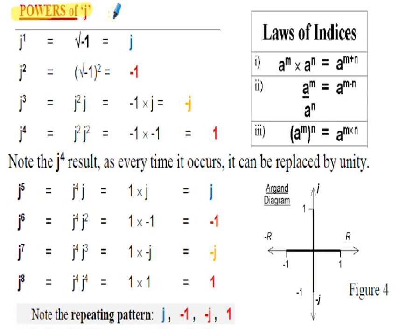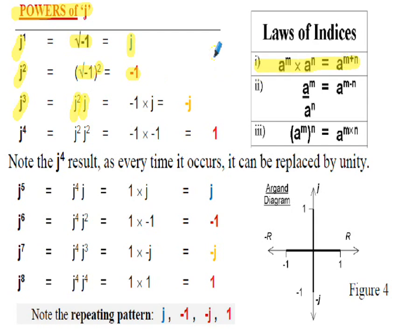Let us consider the powers of j. j to the 1 equals the square root of negative 1, so that's j by definition. j squared, j times j, equals the square root of negative 1, squared — that's negative 1, a real number. j cubed, which is j times j times j, can be written as j squared times j. We know j squared equals negative 1, so negative 1 times j is negative j. So j cubed is negative j.